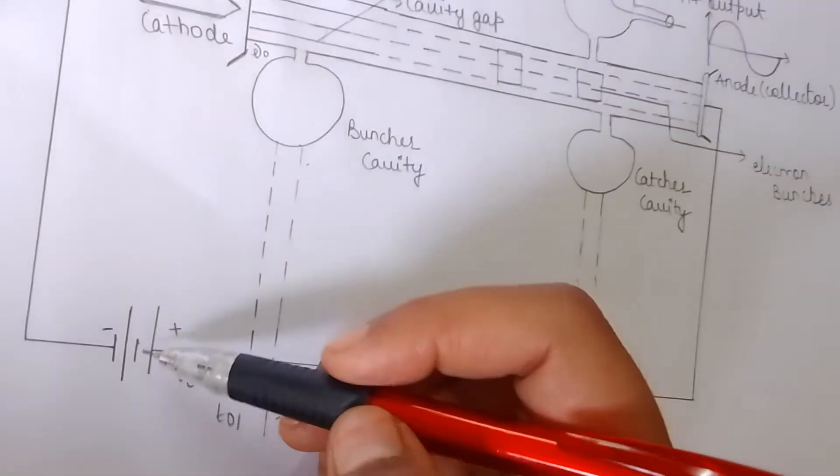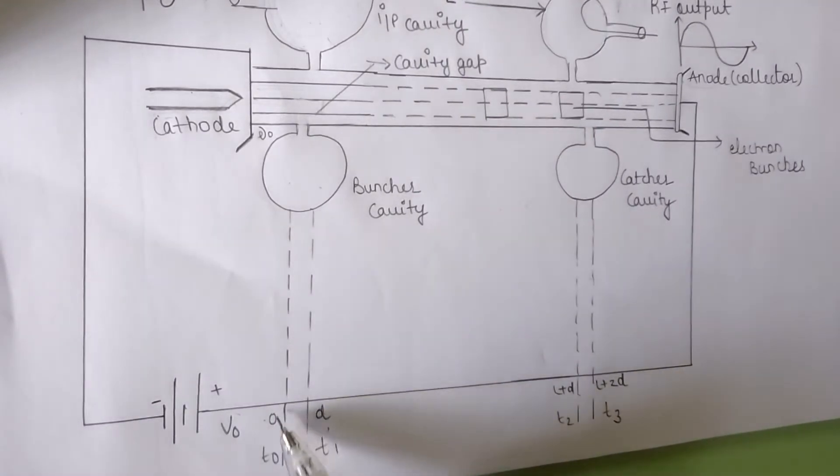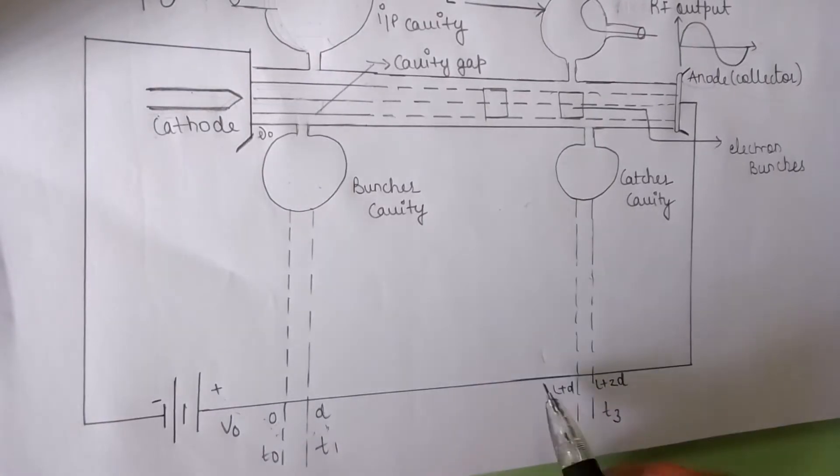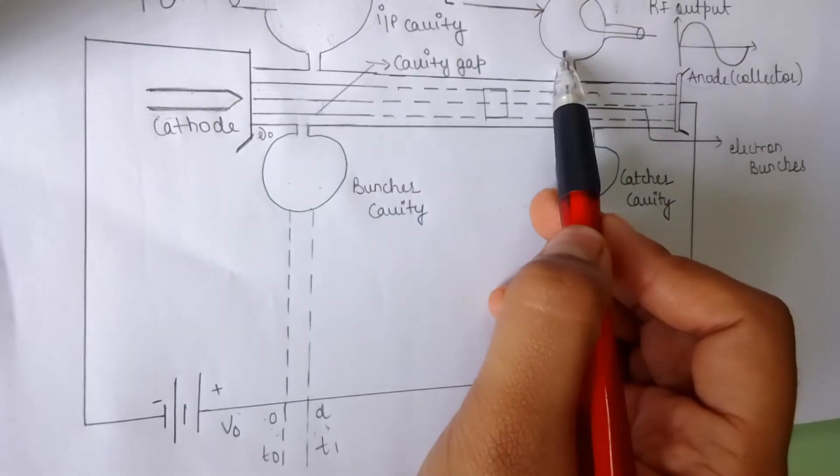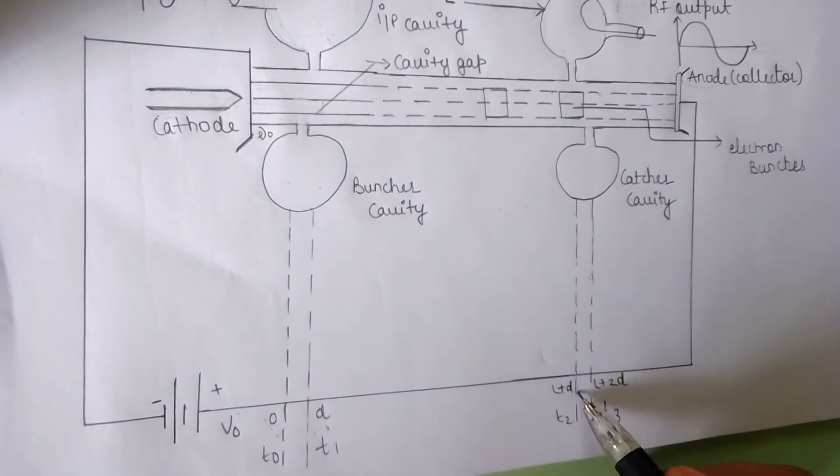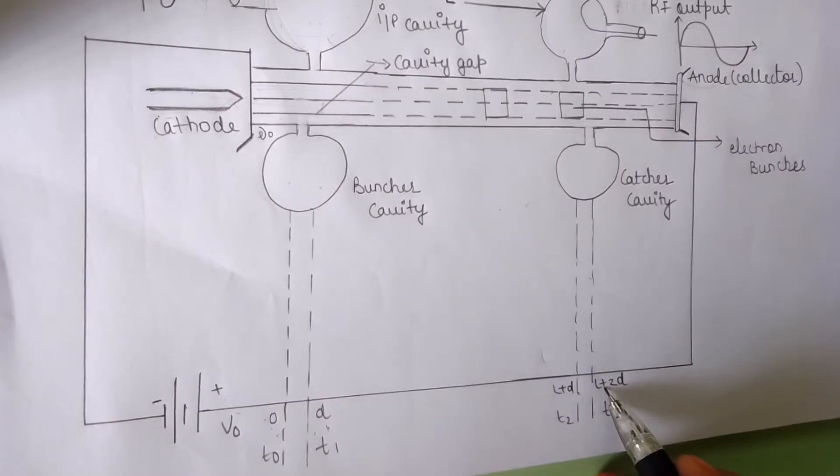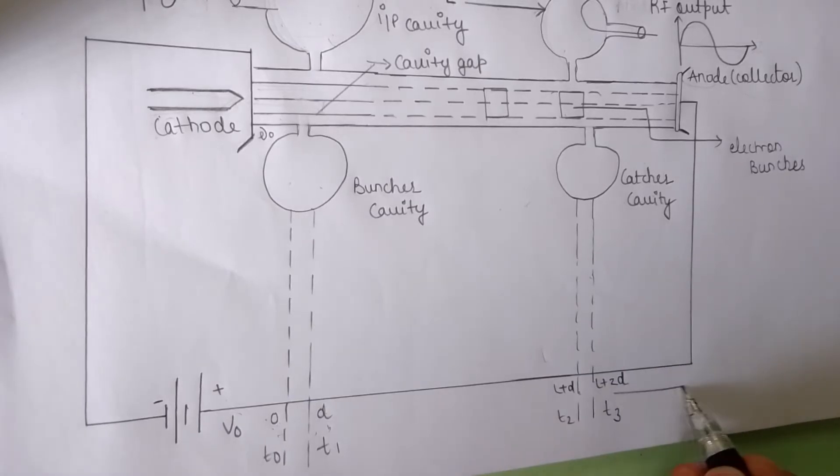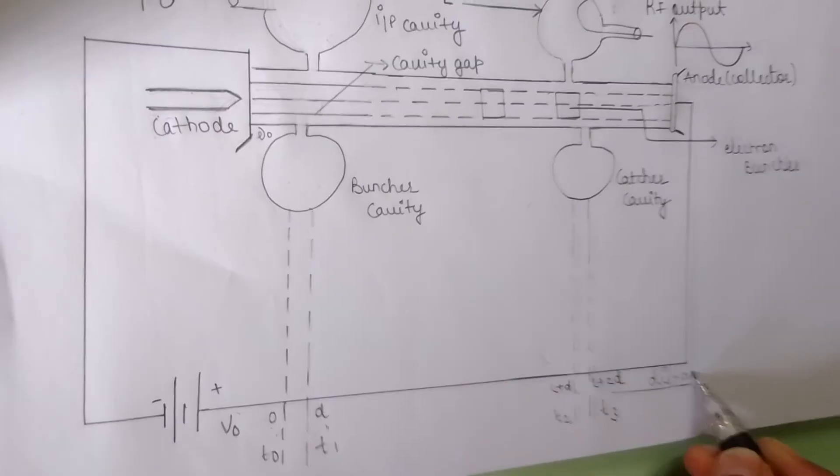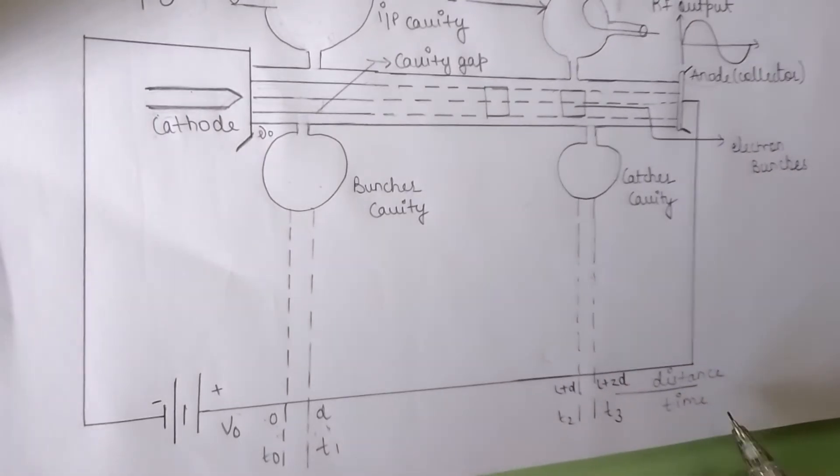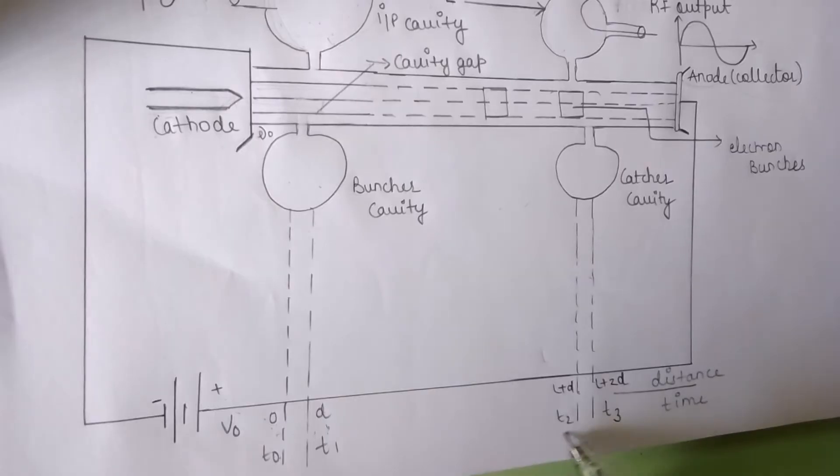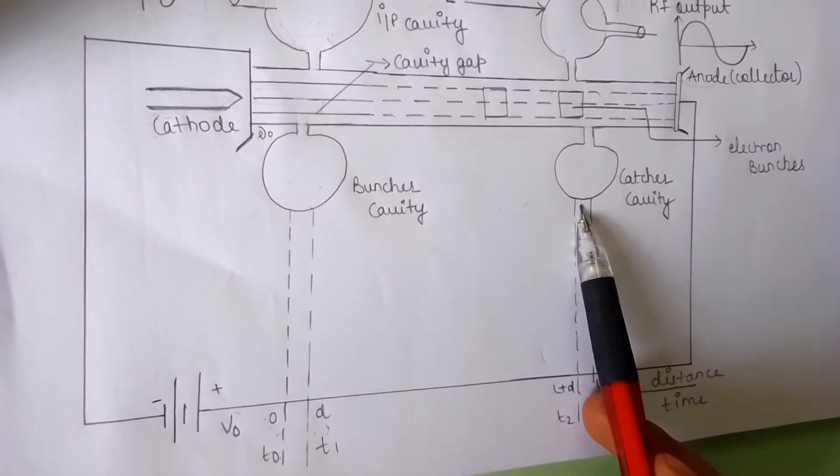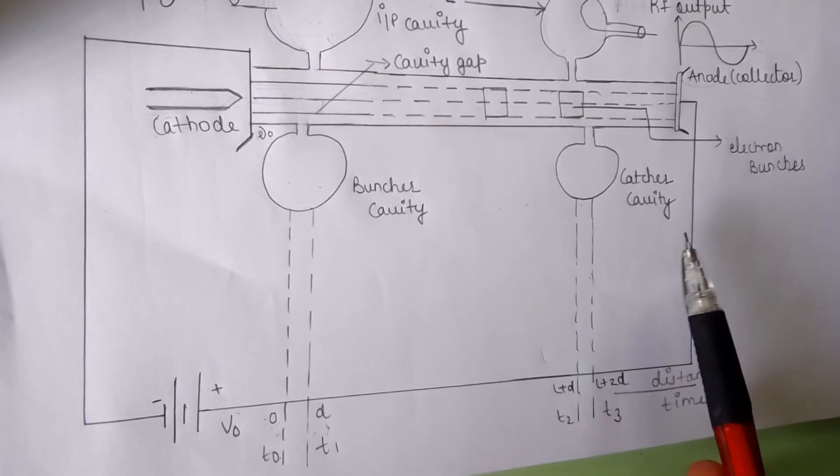Now, this is the cathode voltage and this is the distance between the cavity gap. Here you can see the L which is the drift space or the distance between the buncher cavity and the catcher cavity. The distance here will become L plus D and here L plus D plus D which is L plus 2D. Here, this represents the distance and this represents the time. The T0 is the time when the electrons enter the buncher cavity and T1 is the time when electrons exit the buncher cavity. T2 represents the electron bunches entering into the catcher cavity and T3 represents the electrons exiting the catcher cavity.